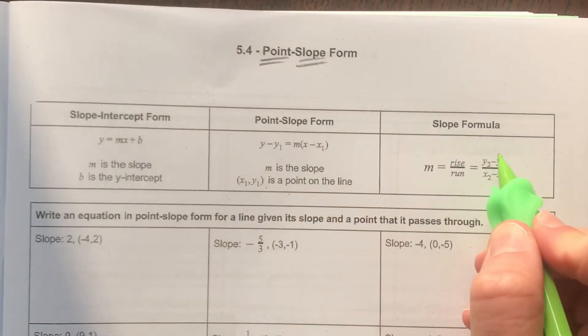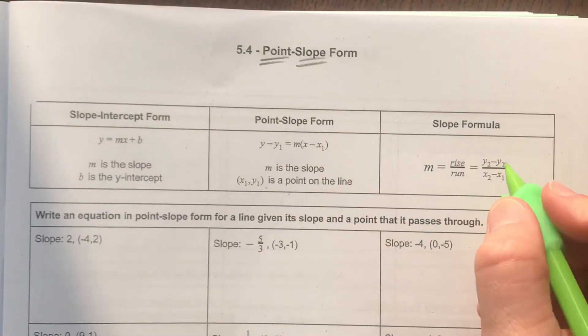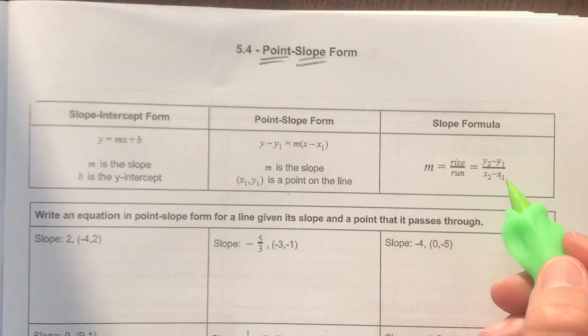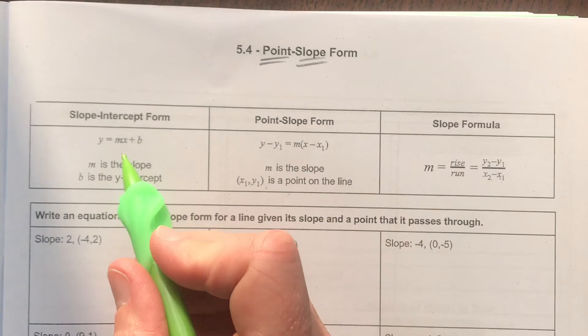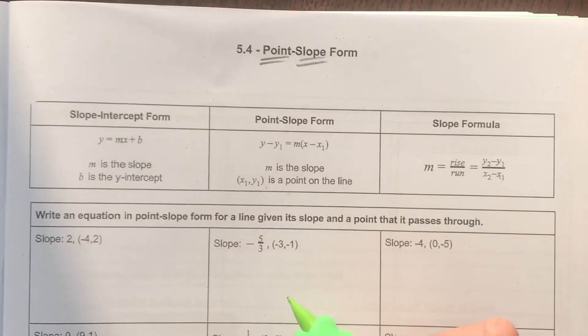And then there's one other formula that would be very important for you to know, and it would be the formula for slope of a line. And so that formula is over here. It's rise over run, and we'll be working with these three formulas today.